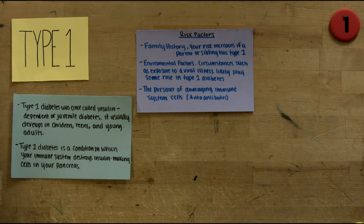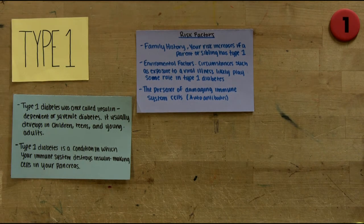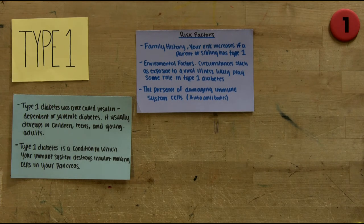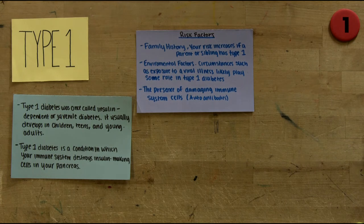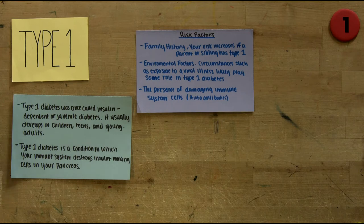Risk factors of Type 1 diabetes: Family history — your risk increases if a parent or sibling has Type 1. Environmental factors — circumstances such as exposure to a viral illness likely play some role. Also, the presence of damaging immune system cells called auto-antibodies.